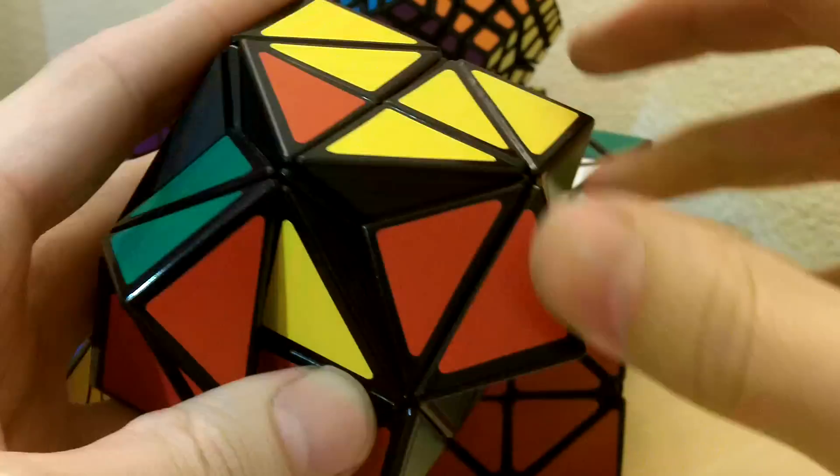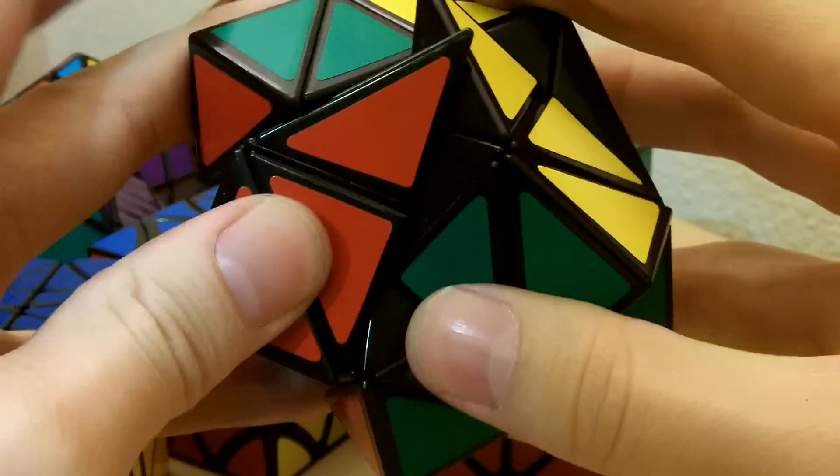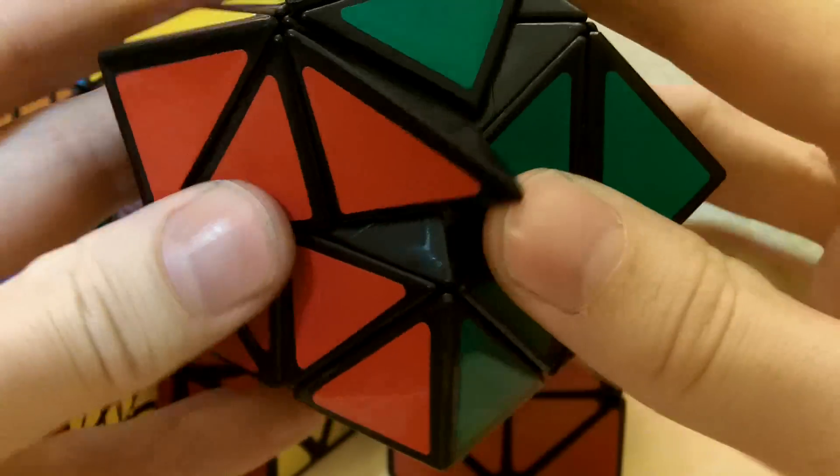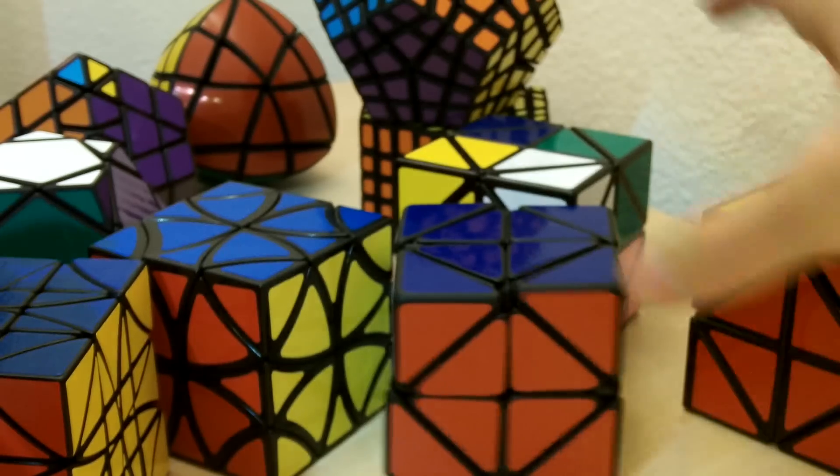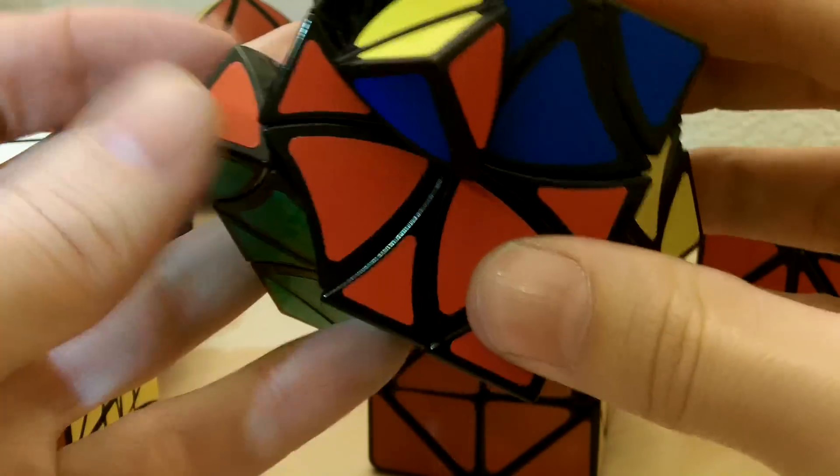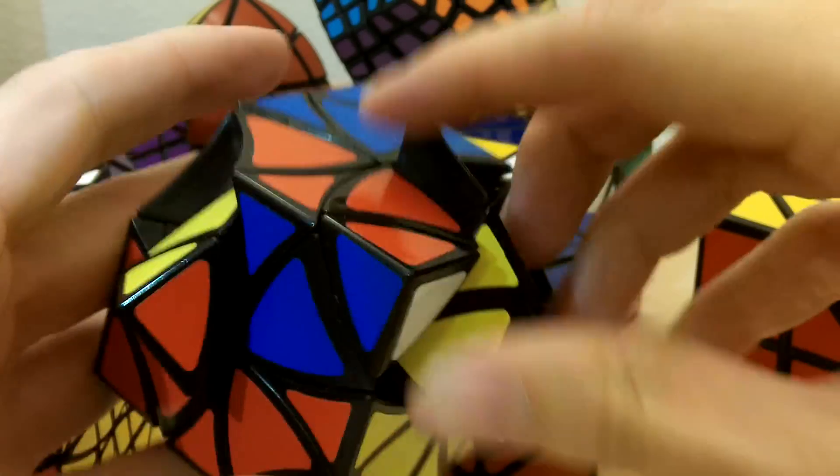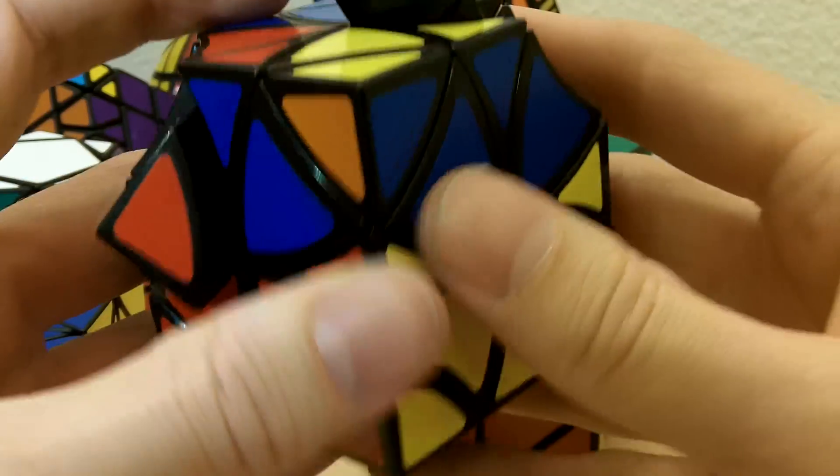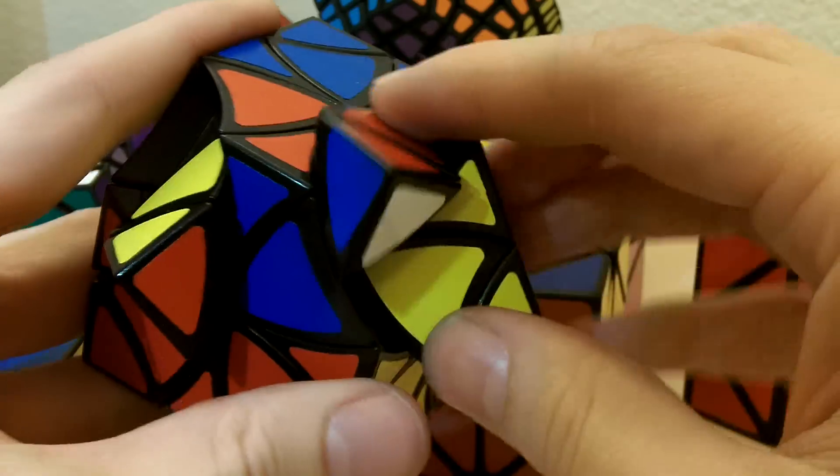And so you can do things like that and the puzzle sort of changes shape. So let me undo that. Okay, now let me show the same thing on a Curvy Copter. Same angle, same principle. Change of shape, let me undo.